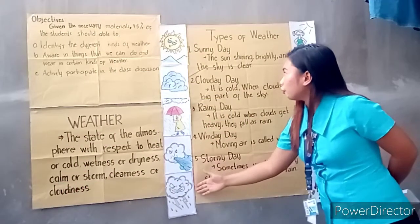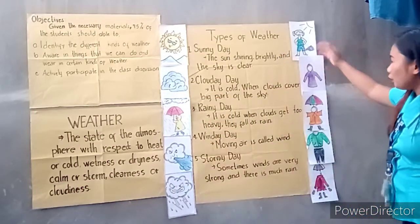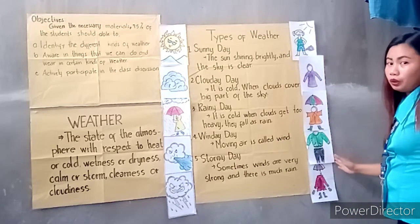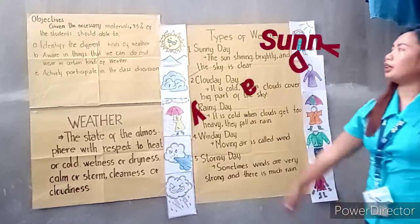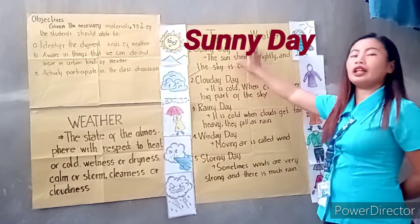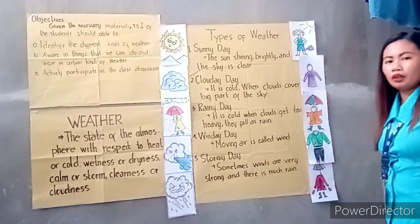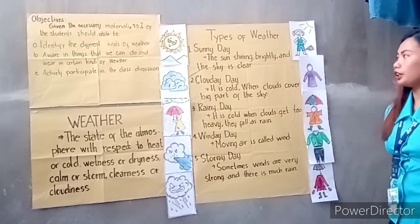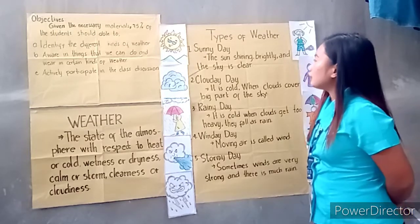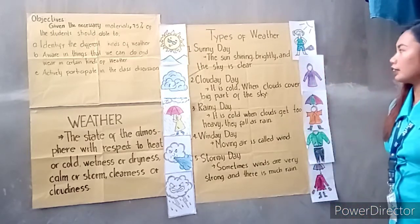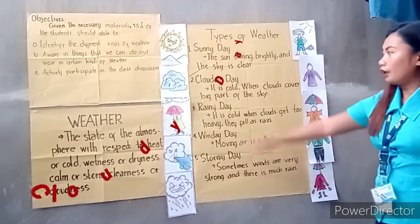So we have here the types of weather. This picture shows us and represents what a weather is, and this picture shows what should be used during that weather. So first, let's begin with a sunny day. So anyone can read what is a sunny day? Okay, Roger, very good. Sunny day: the sun is shining brightly and the sky is clear.